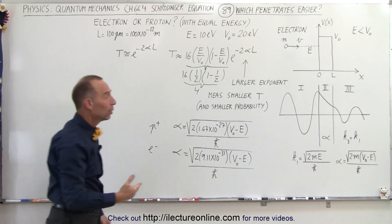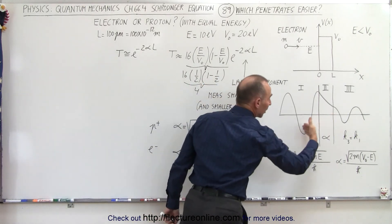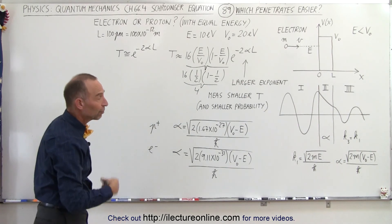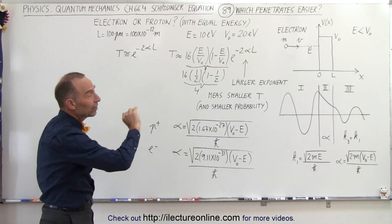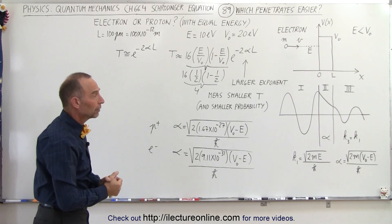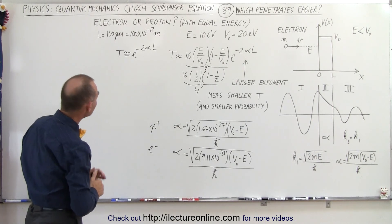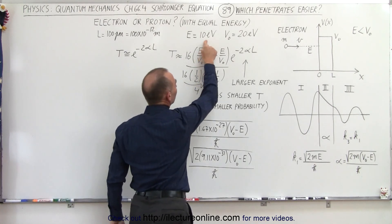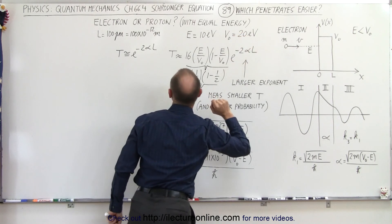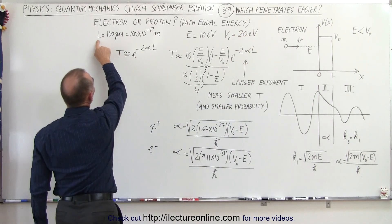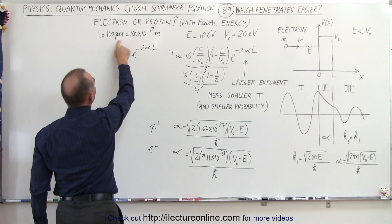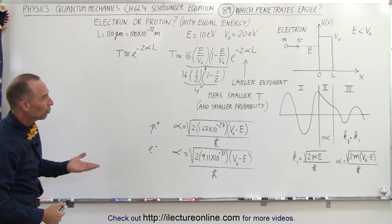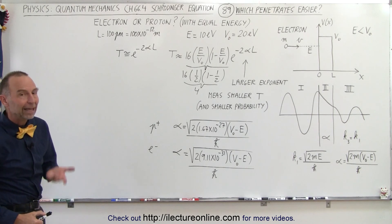In other words, a proton will not nearly as likely make it through the barrier compared to an electron, simply because it has a bigger mass. If it has a bigger mass, it has a smaller wavelength, and it's less likely to get through the barrier. We're going to work it out: energy equal to 10 electron volts, potential of the barrier 20 electron volts, and the distance across the barrier 100 picometers, or 100 times 10 to the minus 12 meters.